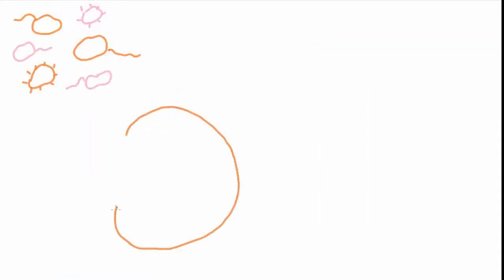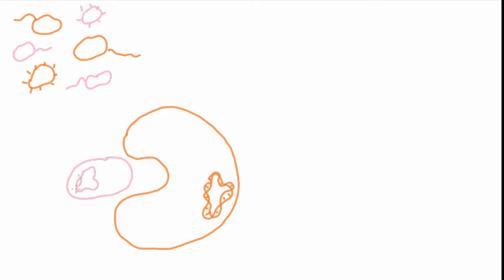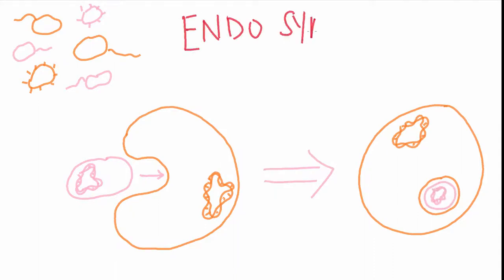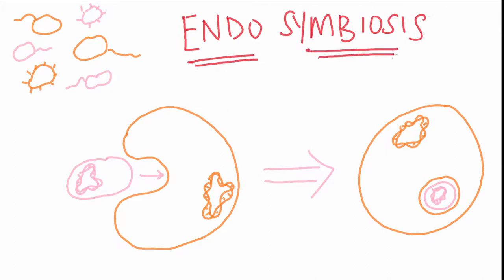In this ancient world full of single-celled life something amazing happened. One cell engulfed another but didn't digest it. This rare but important event is called endosymbiosis — endo meaning within, and symbiosis referring to the new partnership formed. The cells that were engulfed took on new and specialised functions which added to the complexity of the new cell.